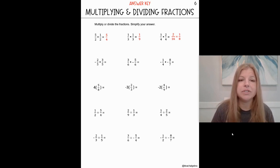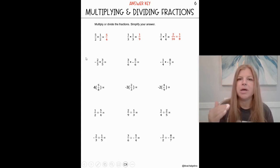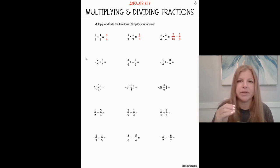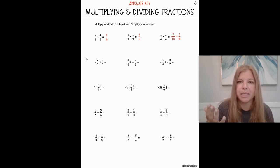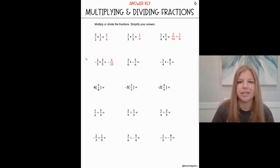Next one: negative two fifths times three fifths. I'm going to treat that negative symbol — I tell my students to send that negative to the numerator and just leave it there. Don't put it to both, because a negative divided by a negative would then make it a positive. So I see negative two times three is negative six, five times five is twenty-five, and I get my answer of negative six twenty-fifths.